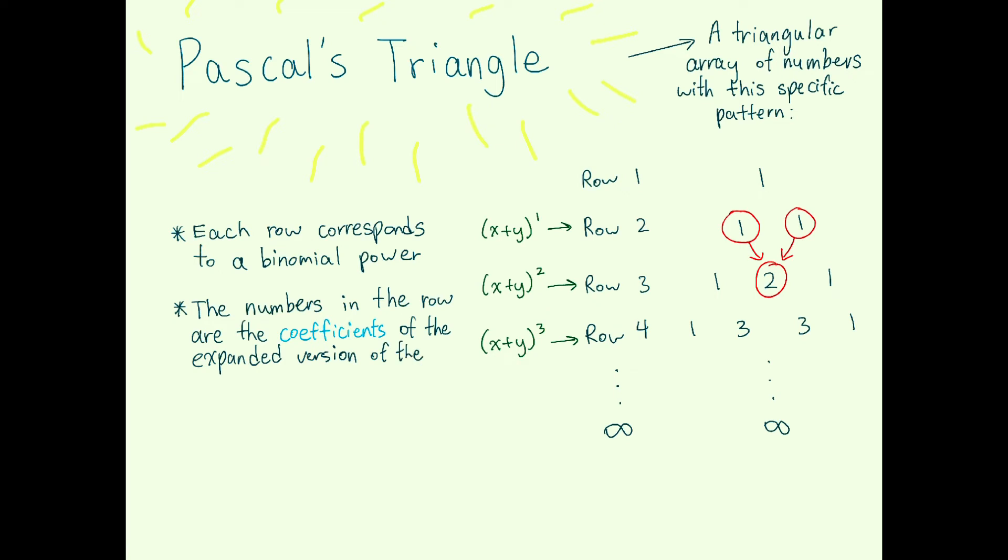If we use x plus y cubed as an example, you can see that the coefficients of the terms are 1, 3, 3, and 1, which match the numbers in the fourth row of Pascal's triangle.